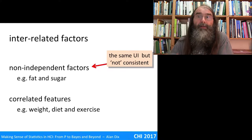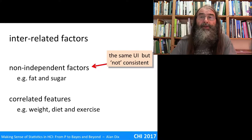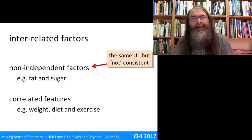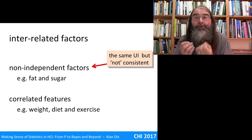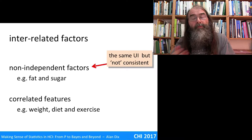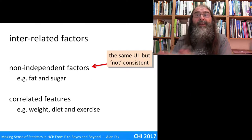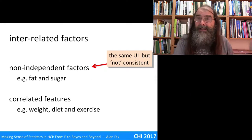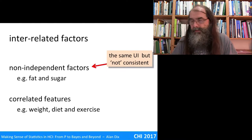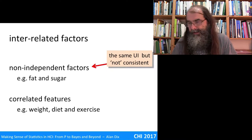That doesn't mean you can't do the experiment, but you need to understand this and try to disentangle these factors. In the end you usually can't completely disentangle them, so you have to use some reasoning and understanding of mechanism — which we'll be talking about in later videos — in order to make sense of this.